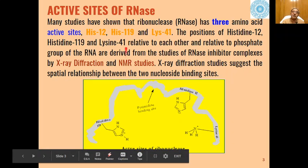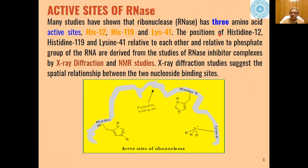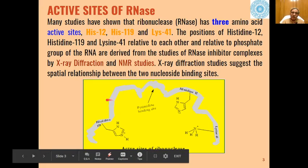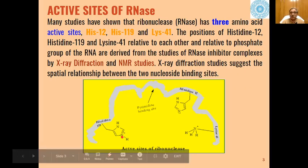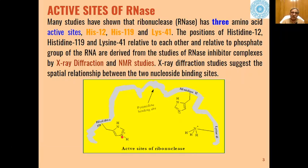In the case of ribonuclease enzyme, there are three active sites which are responsible for the hydrolysis of RNA. One active site is histidine-119, where one of the nitrogens is acting as an acid.